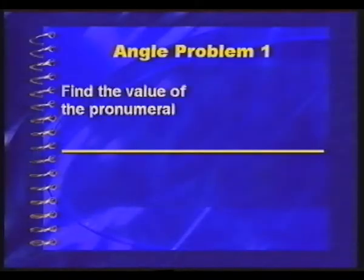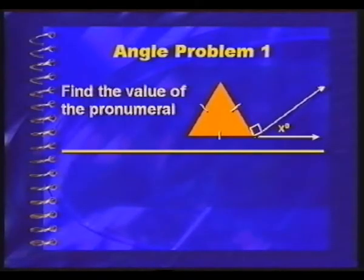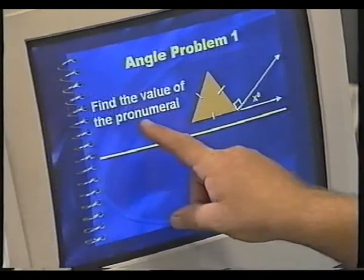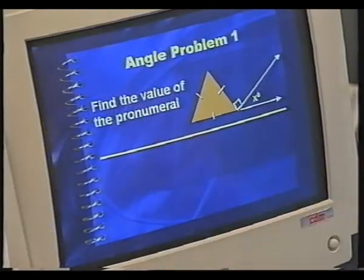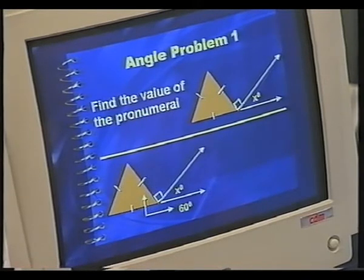The first problem I've got is where we've got an equilateral triangle here. We've got a right angle there, and we want to find the value of x. Now, that is generally called a pronumeral. The value is actually known. You shouldn't really call it a variable. The value is known. It is designated x as such. Well, how do we do that?